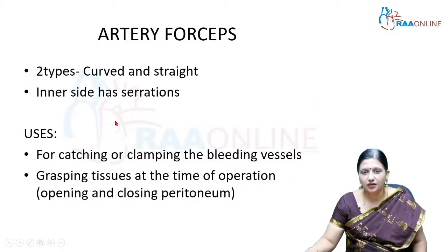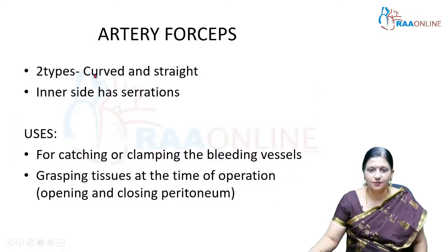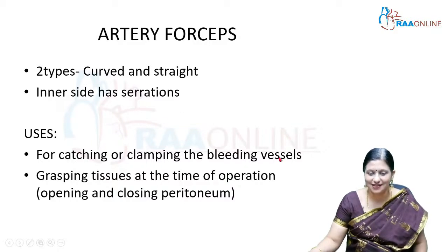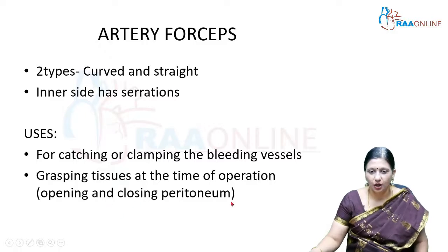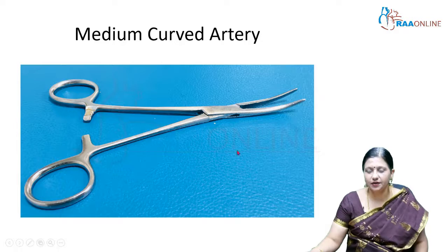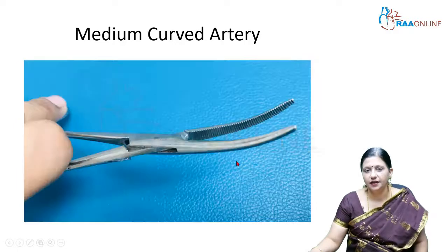Artery forceps can be curved and straight types. The inner side has linear serrations. It is used for catching and clamping bleeding vessels and for grasping tissues during operations like opening and closing the peritoneum.